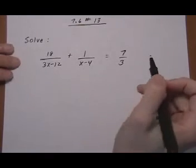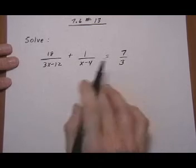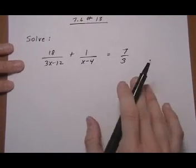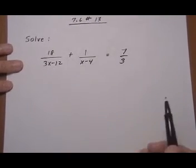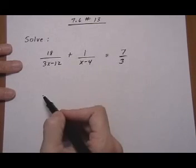For the next couple of problems we're going to use the exact same approach because we still have rational equations. So we're still going to multiply both sides by the LCD, solve the resulting equation, and check your answer. The only difference here is that the LCD is a bit harder to find because we have denominators that need to be factored first.